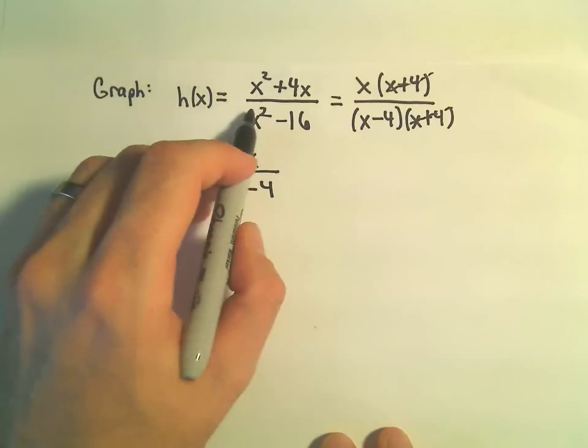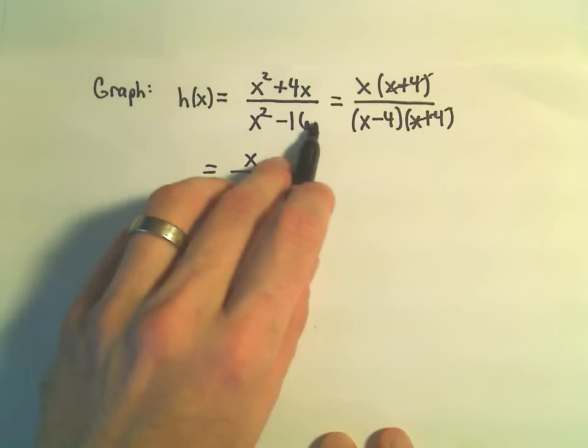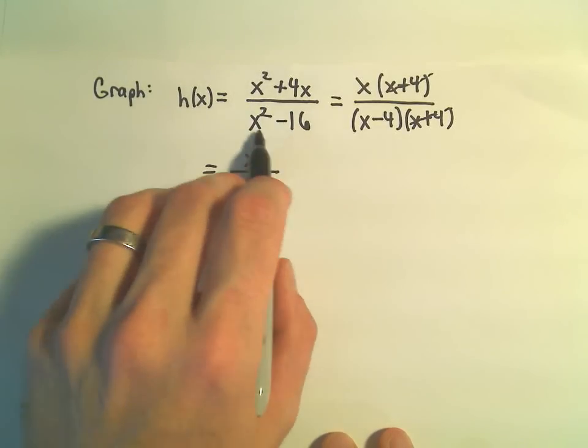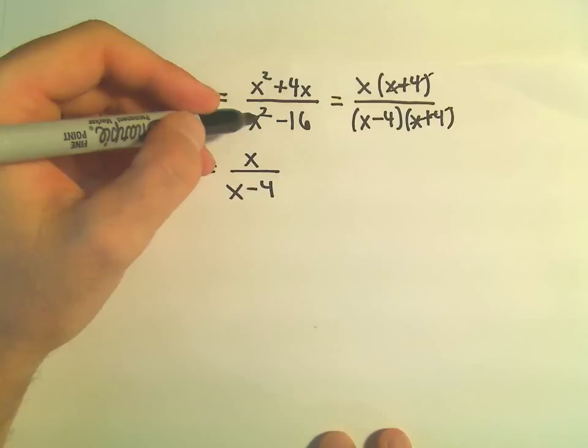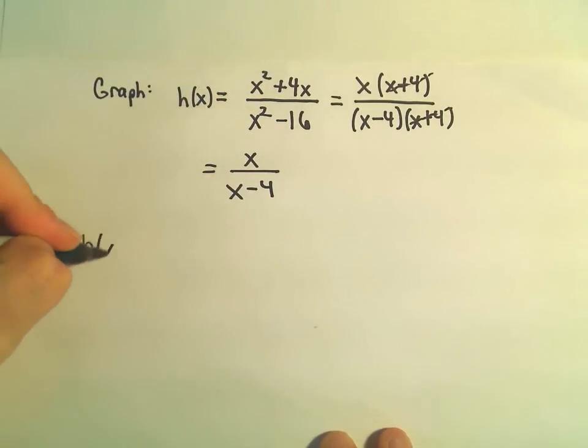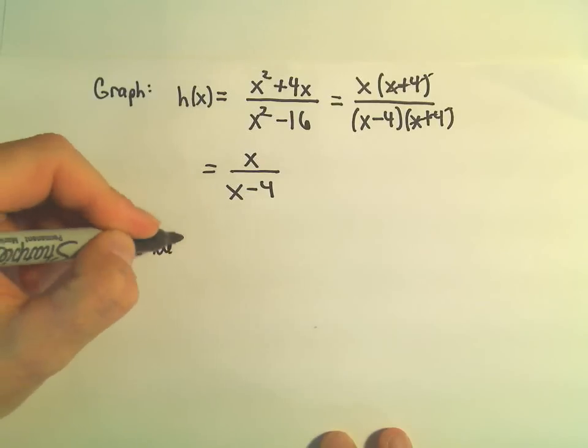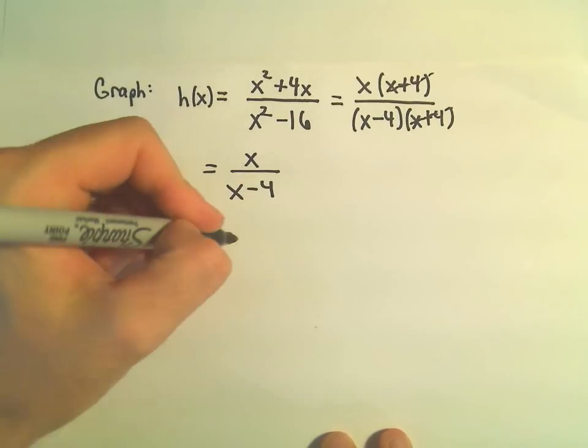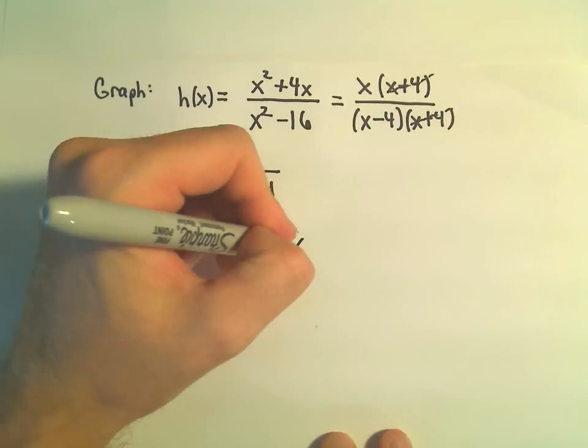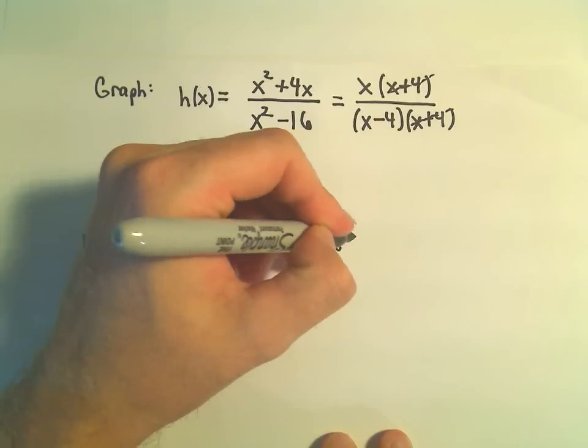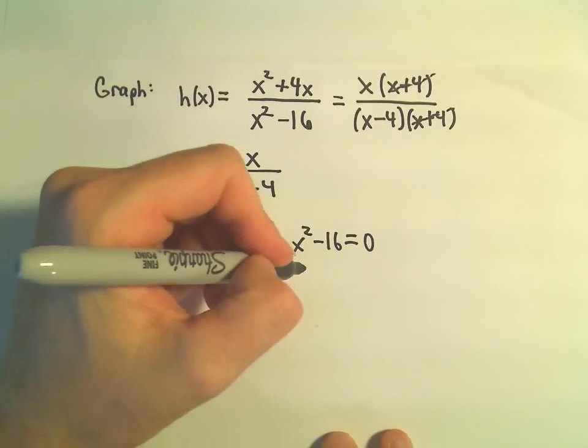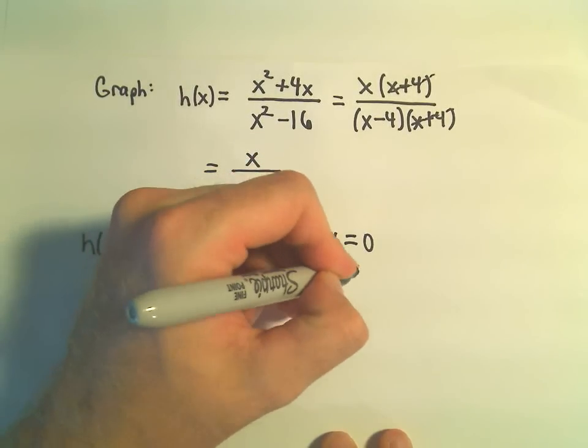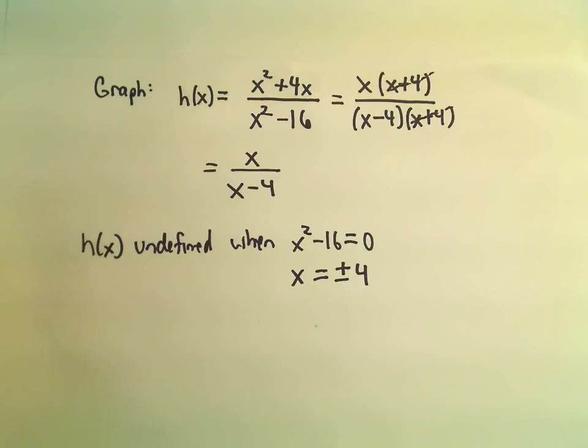Again, a couple things. Notice if we look at the very original function, x squared plus 4x over x squared minus 16. This would be h of x would be undefined when the denominator equals 0. And we could add 16 and take the square root. And that would say it's going to be undefined when x equals positive 4 or when x equals negative 4.